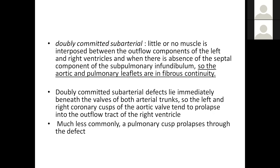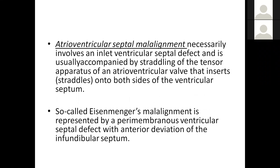Much less commonly, the pulmonary cusps may also be affected. In atrioventricular septal malalignment, there is necessarily an inlet ventricular septal defect, usually accompanied by straddling of the tensor apparatus of an AV valve that inserts on both sides of the ventricular septum. The so-called Eisenmenger malalignment represents the perimembranous ventricular septal defect with anterior deviation of the infundibulum.